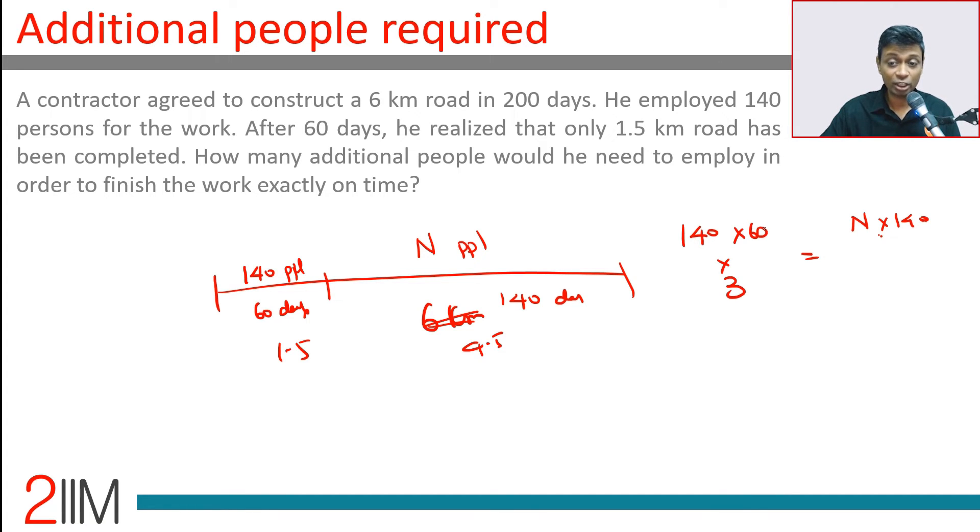140 people working for 60 days, into 3, is N people working for 140, or N is 180. 140 people are already there. We want to know how many additional people will be required. 40 more.